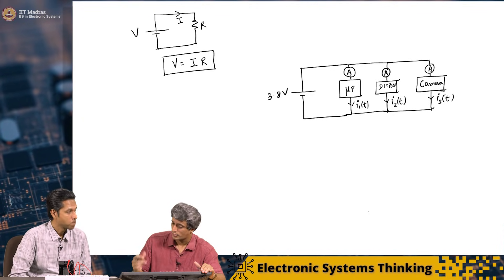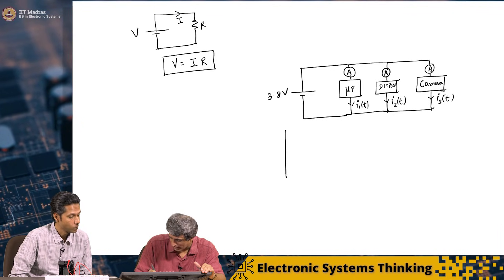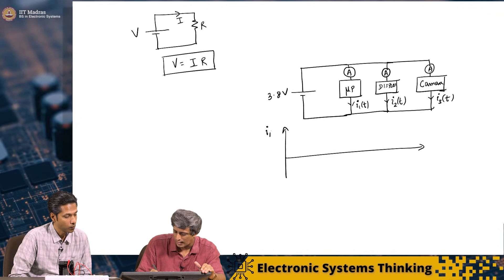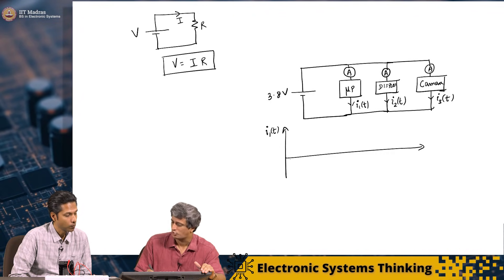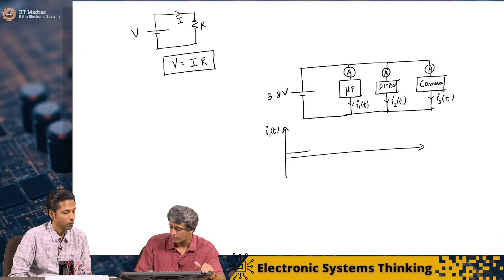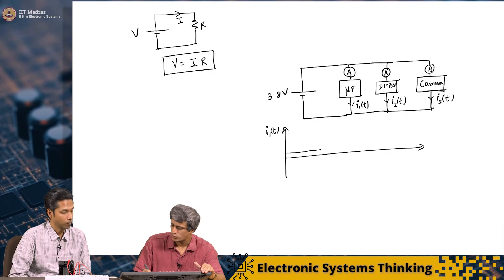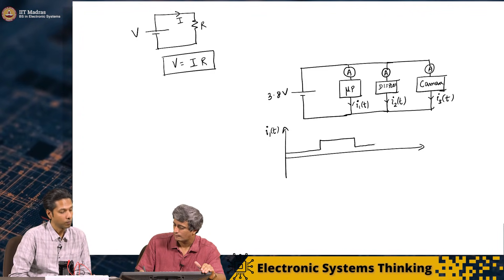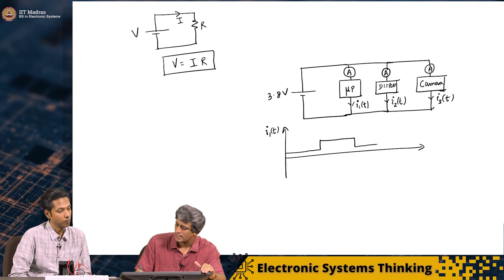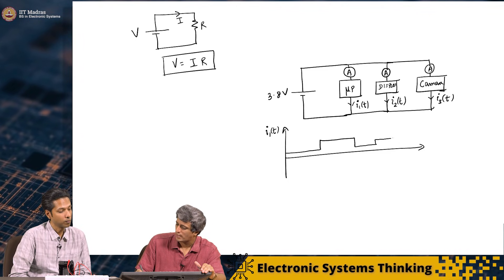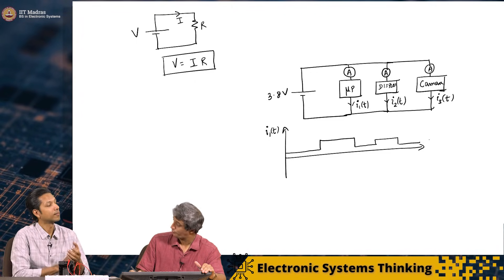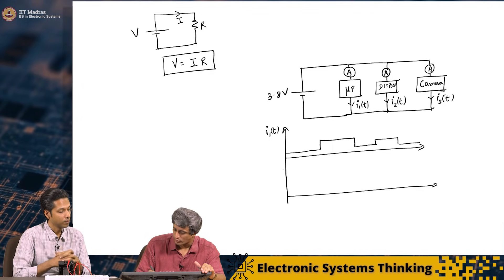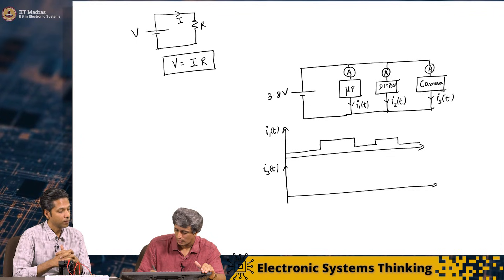Exactly. You are getting there very quickly. What I am saying is these ammeters are able to measure I1(t), which has a certain current pattern. The microprocessor will be consuming some base current. When you maybe make a call, the current may go up a little bit, then it comes back to its idle state, and then let's say you take a photo, it may go up a little bit again.